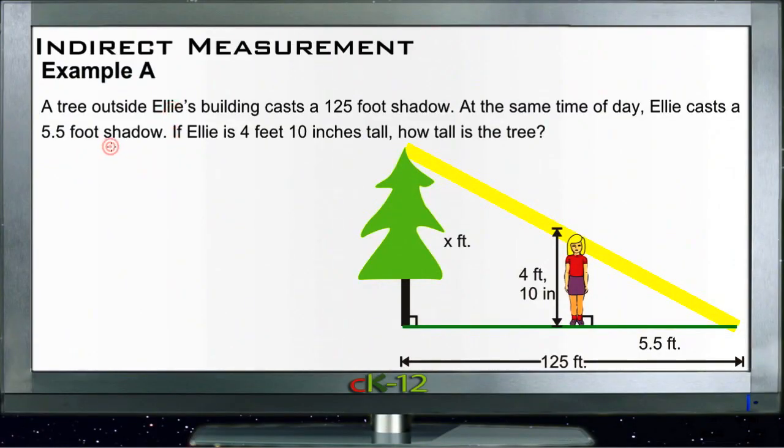Indirect measurement example A says that there's a tree outside Ellie's building that casts a 125 foot shadow. At the same time of day, Ellie casts a 5.5 foot shadow. If Ellie is 4 feet 10 inches tall, then how tall is the tree? So what we have here is a comparison between Ellie's height.